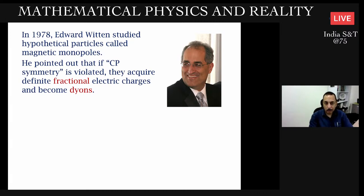Witten pointed out that if a certain symmetry called CP, standing for charge conjugation and parity, is violated in nature, then magnetic monopoles acquire electric charges and become dions. Dions have both electric and magnetic charge. What he was saying is: take a magnetic monopole, embed it in a theory which violates CP symmetry, then automatically that particle also has a fractional electric charge whose amount is proportional to the amount of CP symmetry violation.